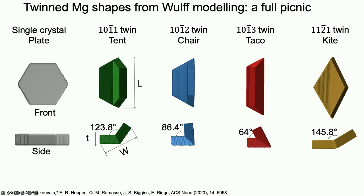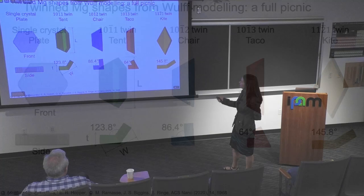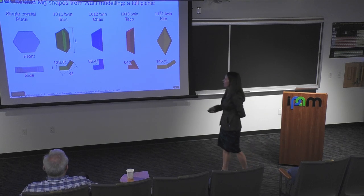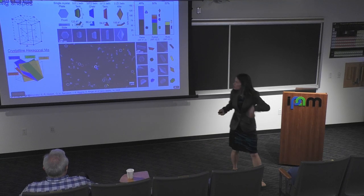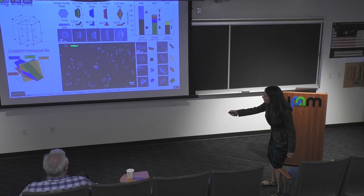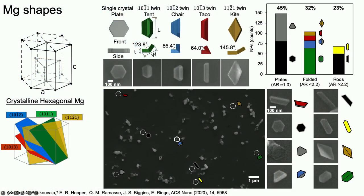We basically changed our model — it's now got a whole lot more buttons — and now we can think about what these can look like. We did that hand in hand between the theorists and experimentalists in my group, and found these kinds of shapes that we predicted. These are twinned along the lowest energy twin plane. We thought about names for them. We've been calling one the 'tent' for a while. What goes next to a tent? A chair. What do you do when you sit in the chair in your tent? You eat tacos and maybe fly a kite. So this paper in my group is called the picnic paper.